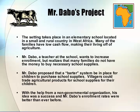Mr. Davos Project. The setting takes place in an elementary school located in a small and rural country in West Africa. Many of the families have low cash flow, making their living off of agriculture. Mr. Davos, a teacher at the school, wants to increase enrollment but realizes that many families do not have the money to buy necessary school supplies. Mr. Davos proposes that a barter system be in place for children to purchase school supplies — villagers could trade agricultural products for school supplies for their children. With the help from a non-governmental organization, his idea was a success, and Mr. Davos's enrollment rates were better than ever before.